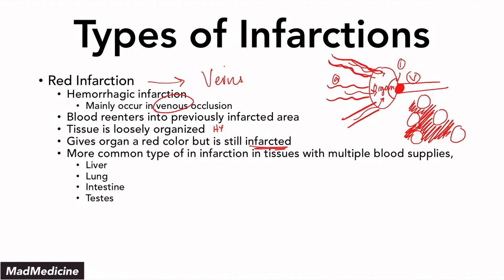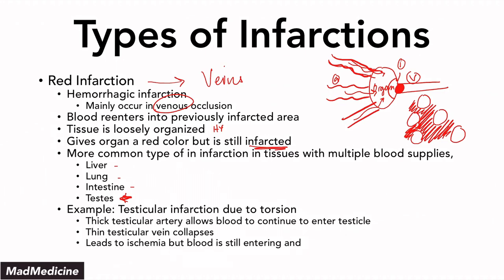Usually, this happens in organs that have multiple blood supplies like the liver, lung, intestines, and the testes. That's the hallmark presentation you're going to see in these organs because they have multiple blood supplies. So just to break it down: if you block the venous system, the nearby area is going to be infarcted, but because you have multiple points of entry and multiple blood supplies coming into these organs, the blood is still going to enter, continue to perfuse as much as it can, and it's going to end up leaking into the loosely organized tissue, giving an appearance of reddish tissue even though that tissue is actually infarcted. A classic example is testicular torsion.